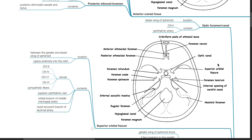The optic foramen or optic canal is located in the lesser wing of the sphenoid and contains cranial nerve 2 and the ophthalmic artery. The superior orbital fissure is located between the greater and lesser wings of the sphenoid and opens anteriorly into the orbit. It contains cranial nerve 3, cranial nerve 4, cranial nerve V1, cranial nerve 6, and sympathetic fibers. Other contents include the superior ophthalmic vein, orbital branch of the middle meningeal artery, and dural recurrent branch of the lacrimal artery.